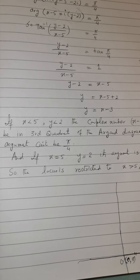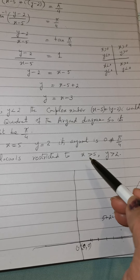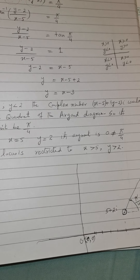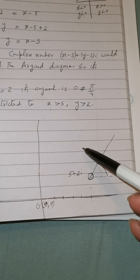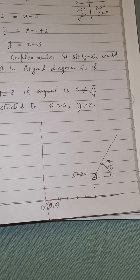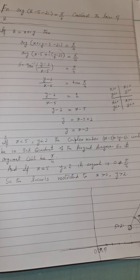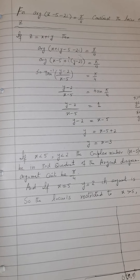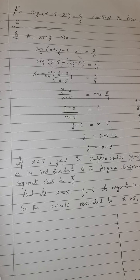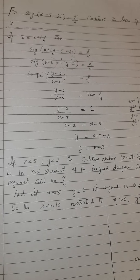The third and valid condition is x > 5 and y > 2, so the point lies in the first quadrant of the Argand diagram. In this region, the argument can be π/4, and we can draw the locus of z as the ray y = x − 3 for x > 5. This is how we construct the locus of z when the argument is given.